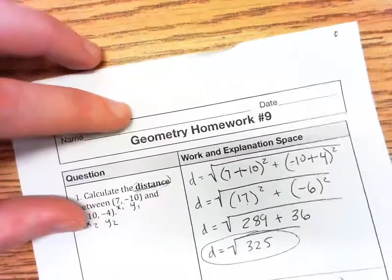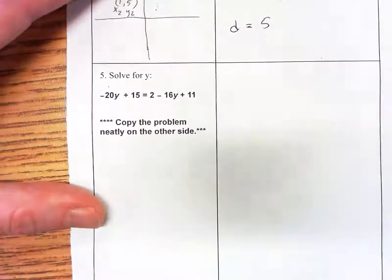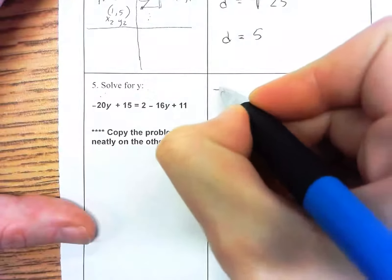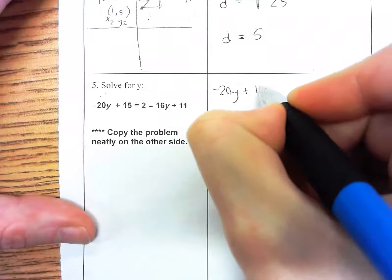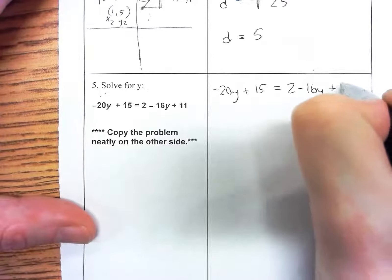This is question number five on geometry homework number nine. This is a review problem solving algebra. It says solve for y. I'm going to copy down the problem: negative 20y plus 15 equals 2 minus 16y plus 11.